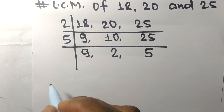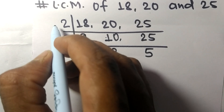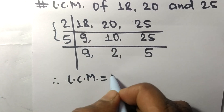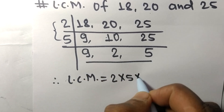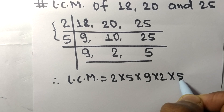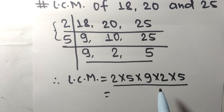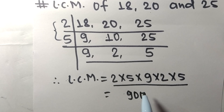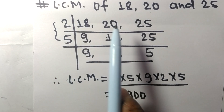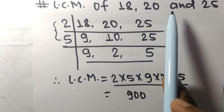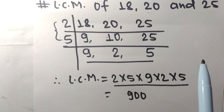Since 9, 2, and 5 are not divisible by the same number, the LCM is found by multiplying all the divisors and remaining numbers. From the left side we have 2 and 5, and from the bottom we have 9, 2, and 5. Multiplying all these numbers gives us 900, so 900 is the LCM of 18, 20, and 25.